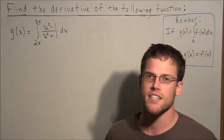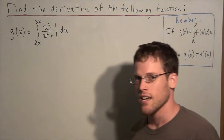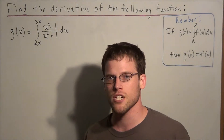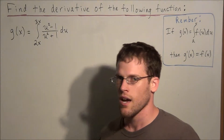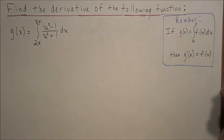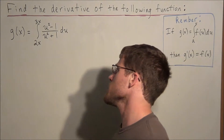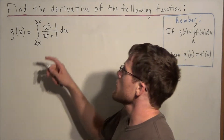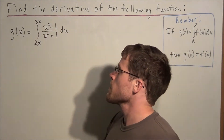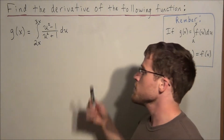Hi, my name is Mr. D and today I want to take a look at calculating the derivative using the second fundamental theorem of calculus and the chain rule. We're going to find the derivative of the following function: g of x equals the integral from 2x to 3x of u squared minus 1 over u squared plus 1, du.